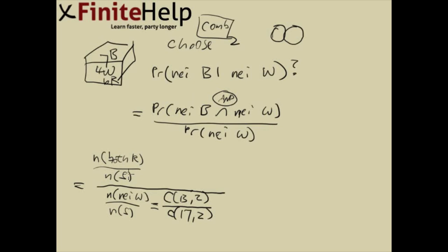And then again, number in sample space. The number is both red, well, you have 6 red to choose from. So we're going to be doing 6 choose 2 combination. Number of sample space, same as bottom, 17 choose 2.